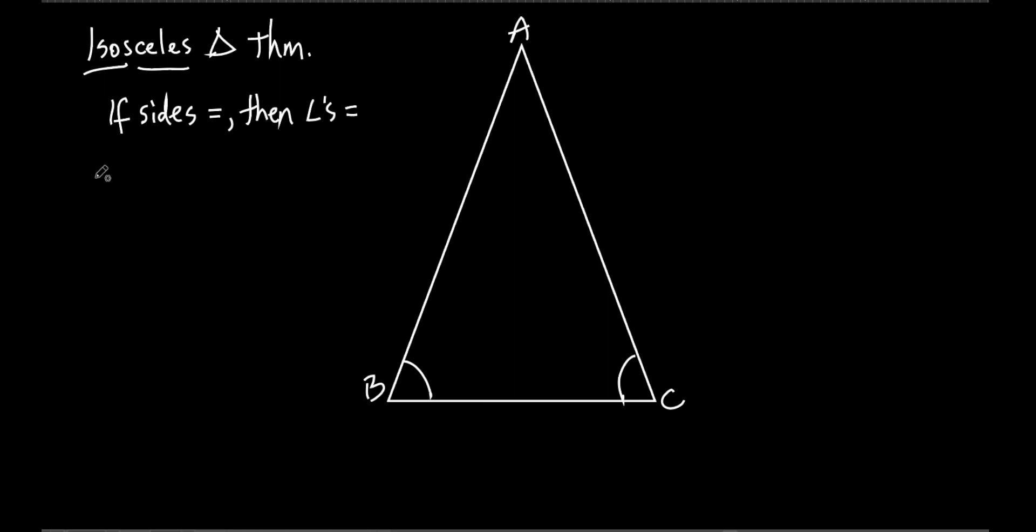This next one, we call that the converse of the isosceles triangle theorem. The converse means if you have an if-then statement, the converse is if I switch the if and then. So, if I flip-flop the if and the then, what would this be? If the two angles are equal, then the two sides are equal. That's the converse of the isosceles triangle theorem.